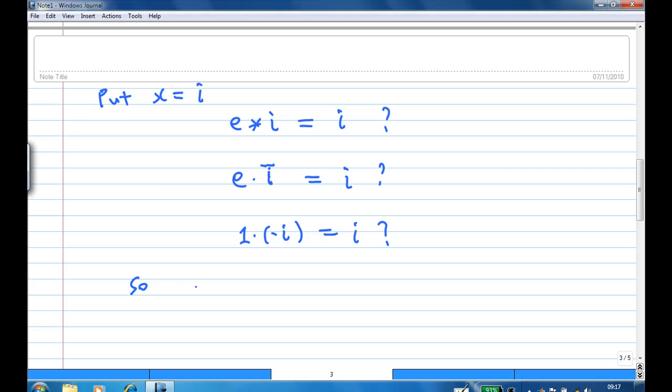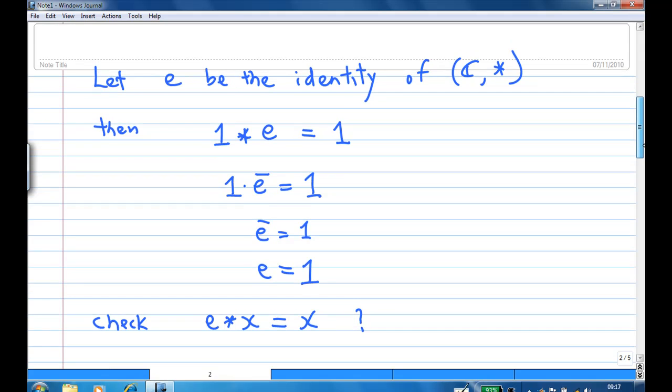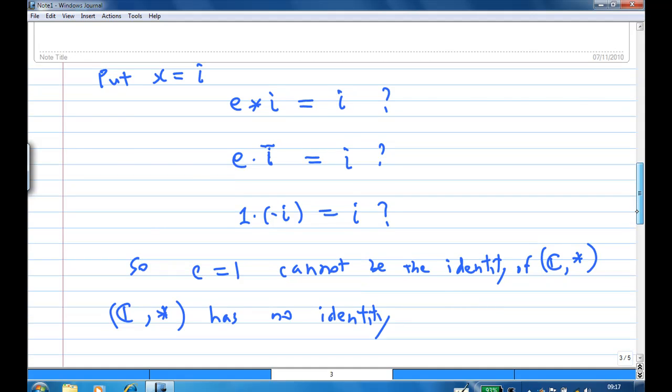So e equal to 1 cannot be the identity of c star. So c star has no identity. Because we show that if e is identity, then e must be 1. And we check that e times i equal to i doesn't work.